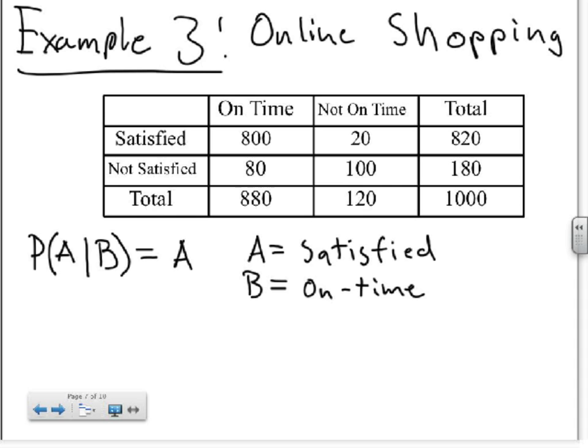Here we're going to treat A as the customer being satisfied and B being the fact that the product arrived on time. So if we work this out, P of the customer being satisfied given the product arrived on time is going to equal, right here you have, given the product was on time and the customer was satisfied, you have 800 right here, that goes on top, divided by the total number of on time, which is right here, so 800 divided by 880 equals roughly 91%.